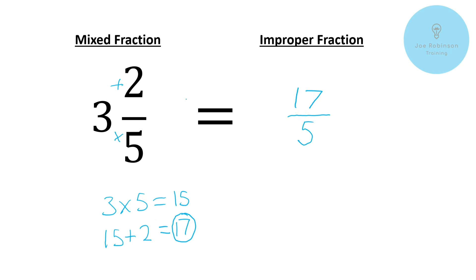That number there is the total number of fifths that we've got in this mixed fraction. So if we then put that number at the top here you can see we've got 17 fifths. And that really is all there is to it. You just multiply the whole number by the bottom part of the fraction, and then all you've got to do is add on the top number to that calculation. So in this case it's three times five gives us 15, and then 15 plus two gives us 17. And we end up with 17 fifths. So you can see that actually converting between a mixed fraction and an improper fraction is really quite simple.